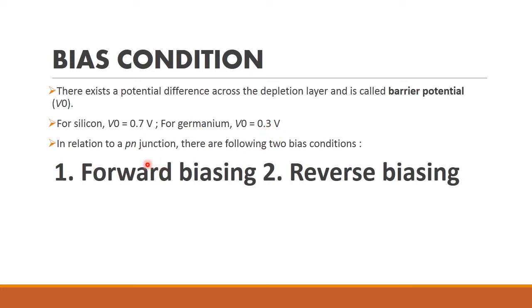Here, two types of bias conditions are used. Biasing is nothing but applying voltage to the P-N junction. Two types of biasing are there: one is forward biasing and the other one is reverse biasing.